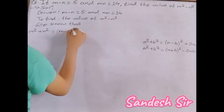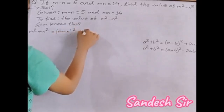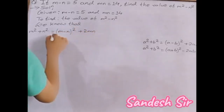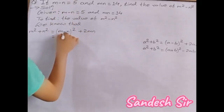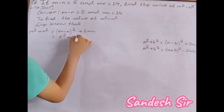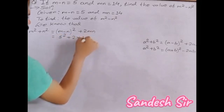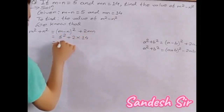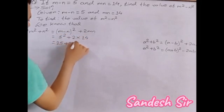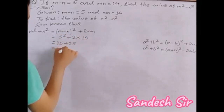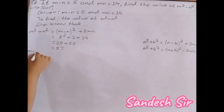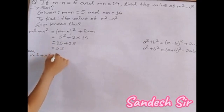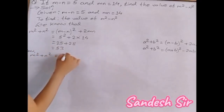So m squared plus n squared equals m minus n whole squared plus 2 times mn. Substituting: 5 squared plus 2 into 14, which gives 25 plus 28, equal to 53. So m squared plus n squared equals 53.